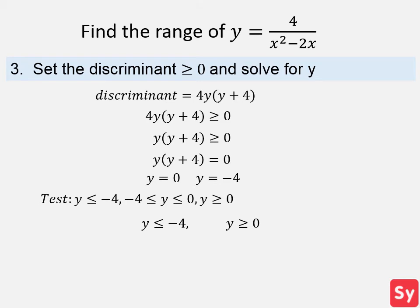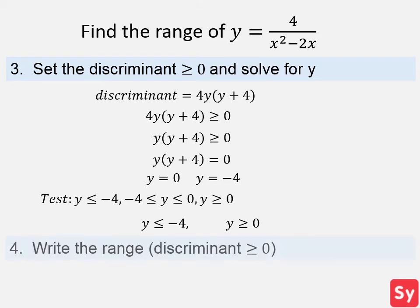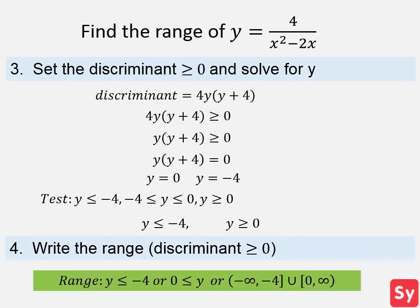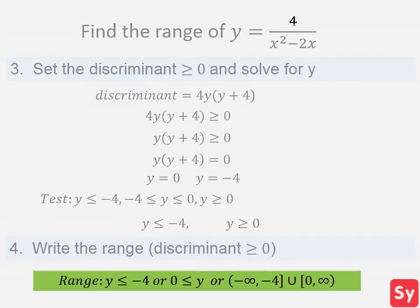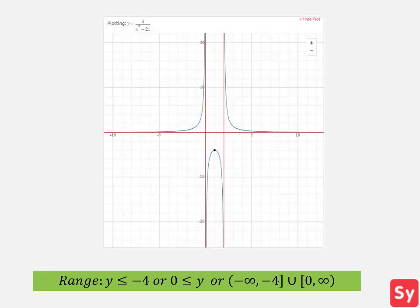For the last step, we write the range, which is when the discriminant is greater than or equal to 0. So the range is when y is less than or equal to negative 4 or y is greater than or equal to 0. Let's look at the graph of this function to verify the range.